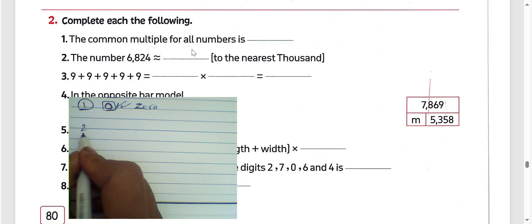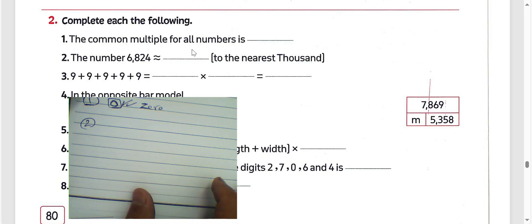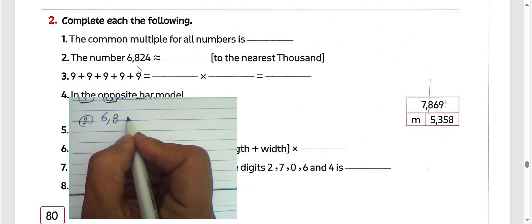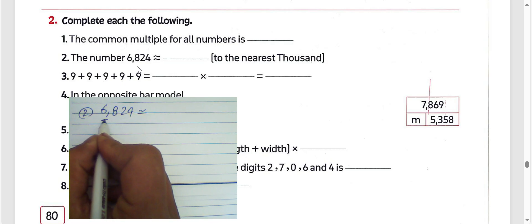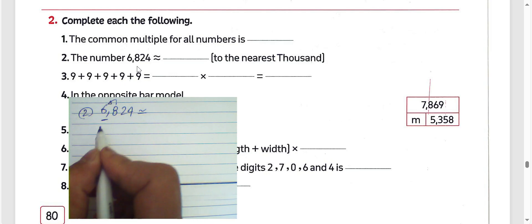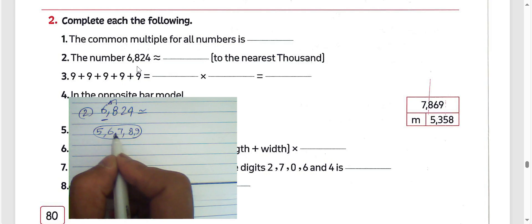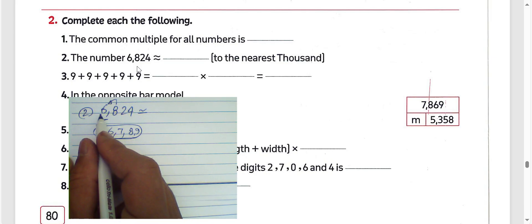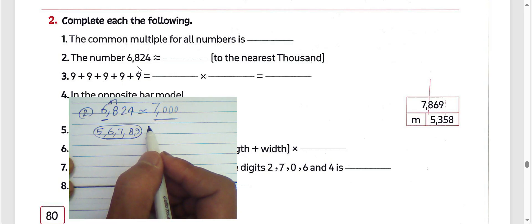Next, question number 2: we have the number 6,824. We want to approximate it to the nearest 1,000. The digit 6 lies in the thousands place, and 8 can give 1 to the left. All digits greater than or equal to 5 give 1 to the left-hand side. So 8 gives 1 to 6, making it 7. The result will be 7,000.